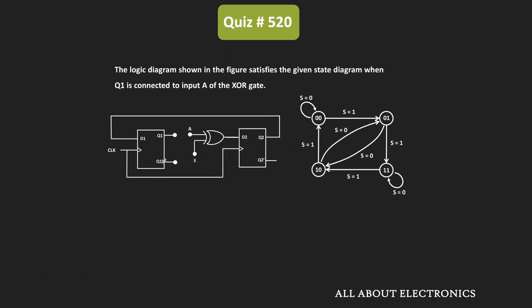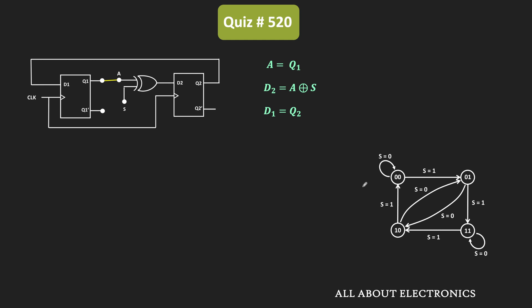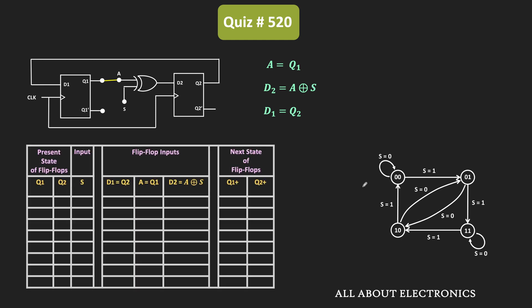So initially, Q1 output is connected to the A input of this XOR gate. In this condition, the A input is the same as Q1. Similarly, the D2 input to the flip-flop is A XOR S, where S is the other input to the XOR gate. And the input D1 to the first flip-flop is the same as the present state of Q2. So A = Q1, D2 = A XOR S, and D1 = Q2. Based on this condition, let us draw a state table to verify the given state diagram.